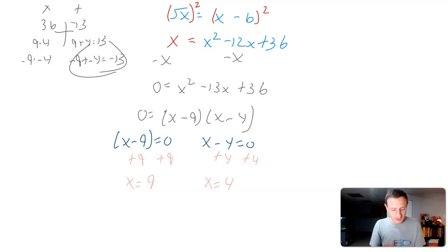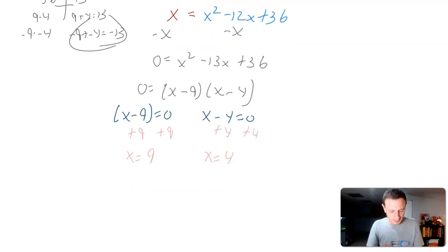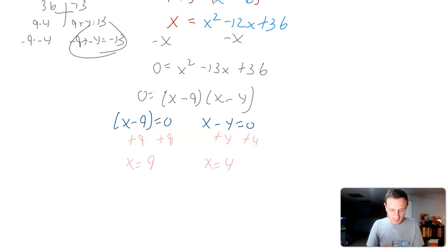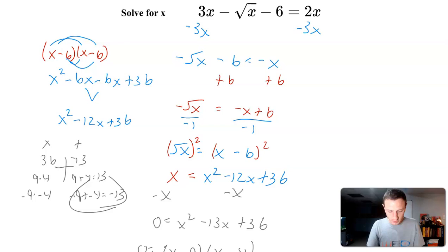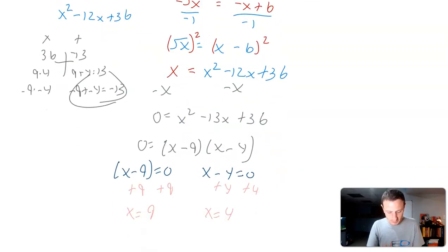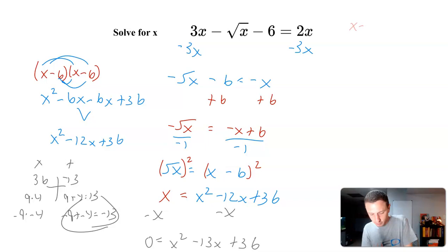We have two potential solutions. It wouldn't be the worst idea in the world to check those just in case something weird happens. So I'm going to double check these. We have 3x minus the square root of x minus 6. I'll try out 9 first: 3 times 9 minus the square root of 9 minus 6 equals 2 times 9.